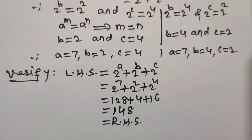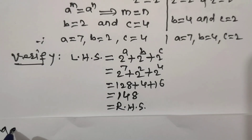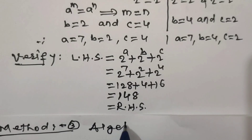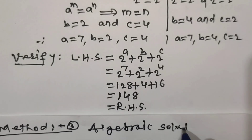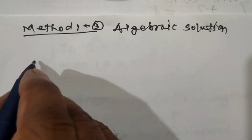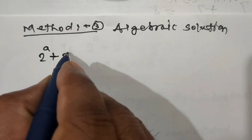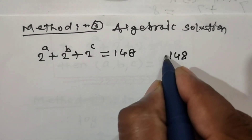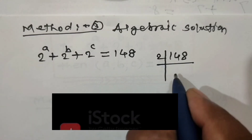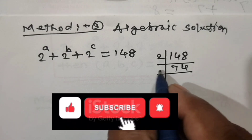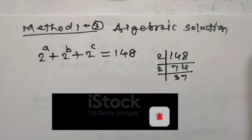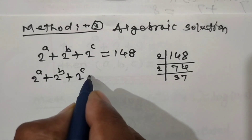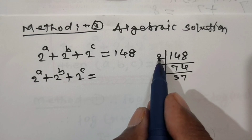Now Method 3: Algebraic solution. Let us rewrite the equation: 2^a + 2^b + 2^c = 148. Dividing 148 by 2 gives 74, dividing again gives 37. Hence 148 can be written as 2² × 37.